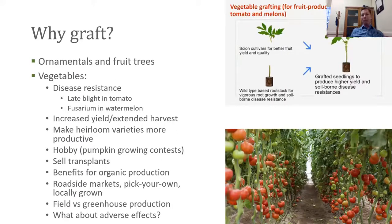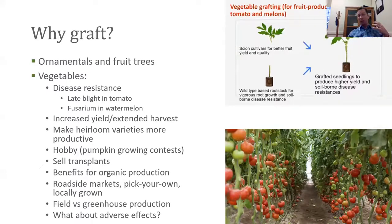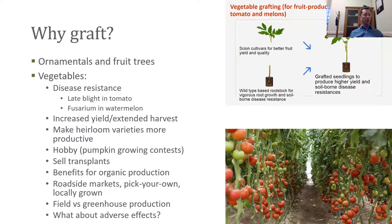Grafting can also result in increased yield and extended harvest — we can get more produce and harvest over a longer period of time. That partly relates to disease resistance, because oftentimes plants look great early in the season, but as summer continues with more rain and humidity there's more disease pressure and we end up losing those plants. Grafting also provides more vigor through a more vigorous root system, which helps increase yield and extend harvest. We can use grafting to make heirloom varieties more productive — heirloom tomatoes have a lot more flavor, but generally they don't yield over as long a period of time and weren't selected for disease resistance, so we can graft those good fruit qualities onto a disease-resistant, vigorous rootstock.